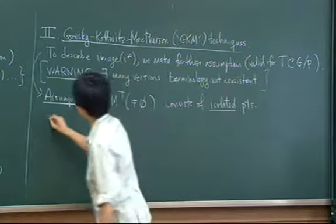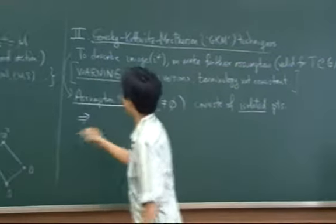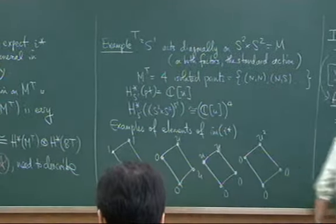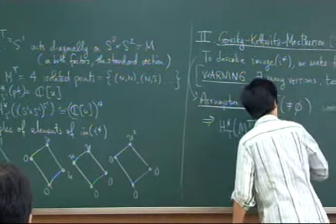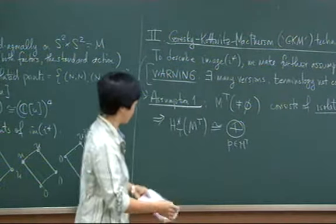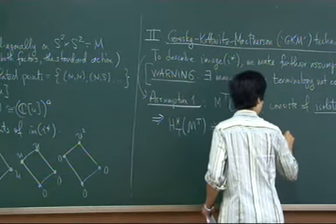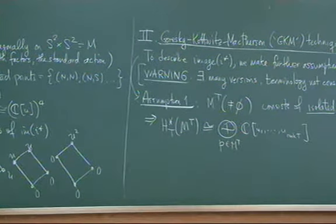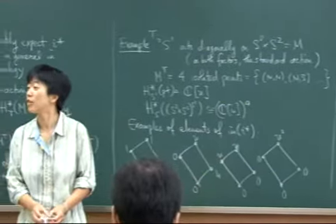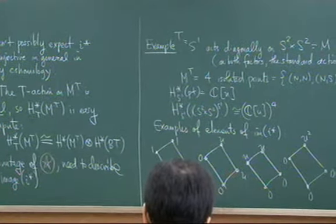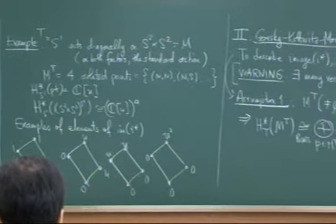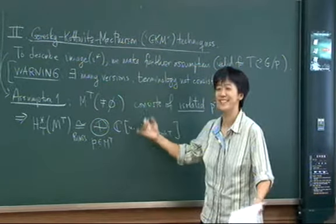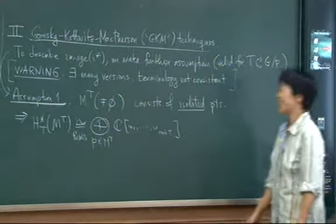So that's the first comment. That means, by what we said earlier, I just have one copy of the polynomial ring for every point in the fixed point set. So this is isomorphic to the direct sum over the points in the fixed point set of the polynomial ring in however many variables I need for the torus I'm working with. I really mean that as a ring — it's the obvious module structure, you just multiply by the constant on all the factors.